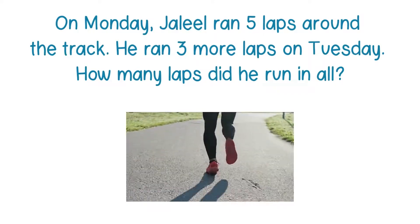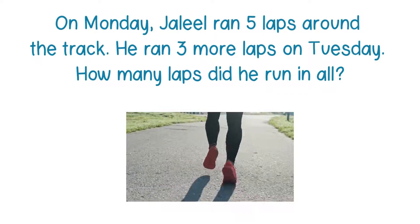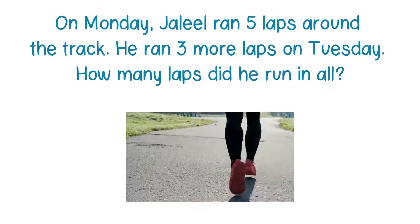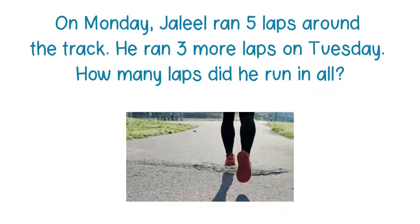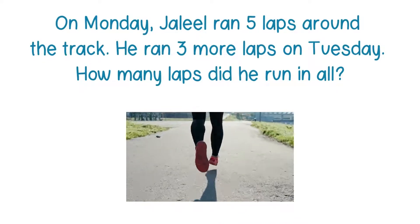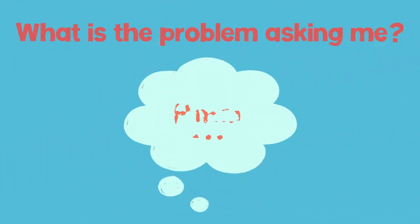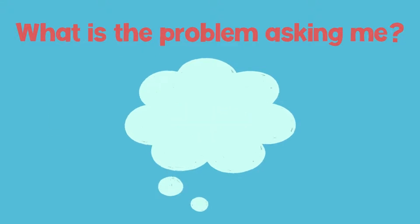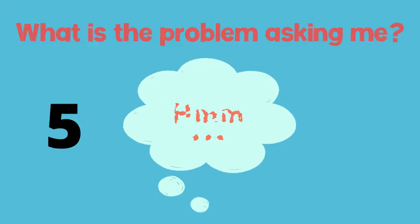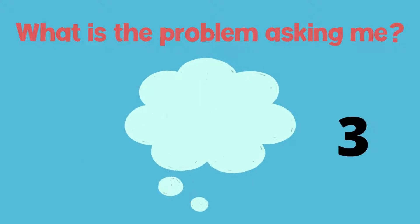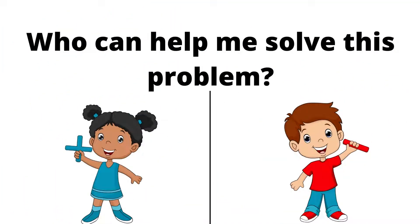Here's our first problem. On Monday, Jalil ran five laps around the track. He ran three more laps on Tuesday. How many laps did he run in all? First, I need to think about what the problem is asking me to do and figure out if I need to add or subtract the numbers. I learned from reading the problem that Jalil ran five laps one day and then on another day he ran three more laps. Now I need to think about what I need to do with those numbers.